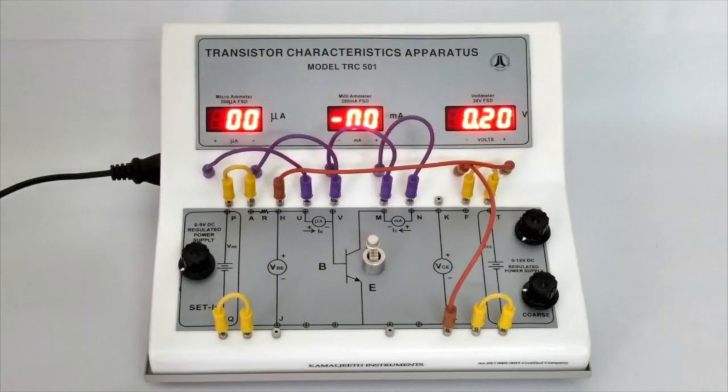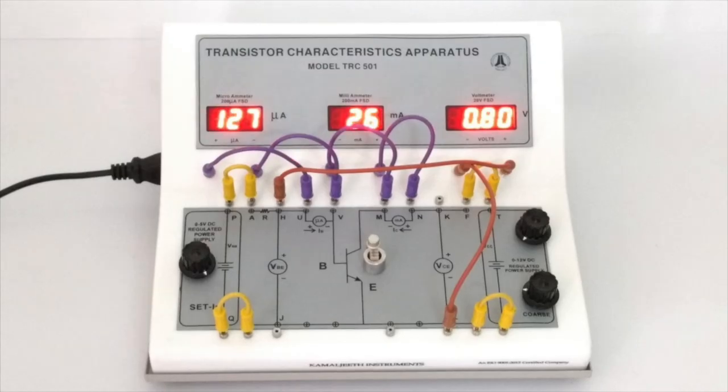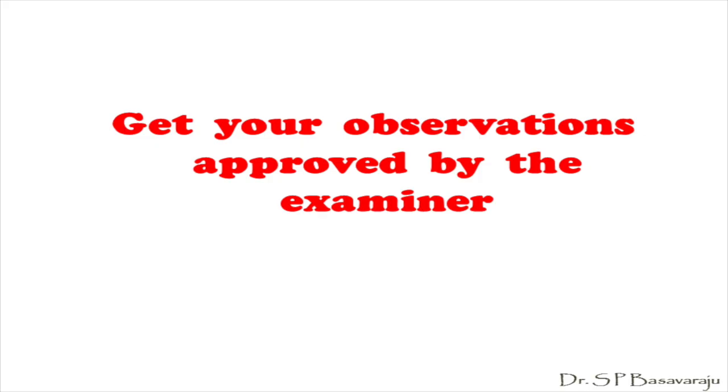VBE is varied from 0 to 0.8 volt in steps of 0.1 volt and the corresponding current readings in the microammeter is noted along with VBE. After a couple of observations, get the approval of the examiner. Leave all the connections as they are.